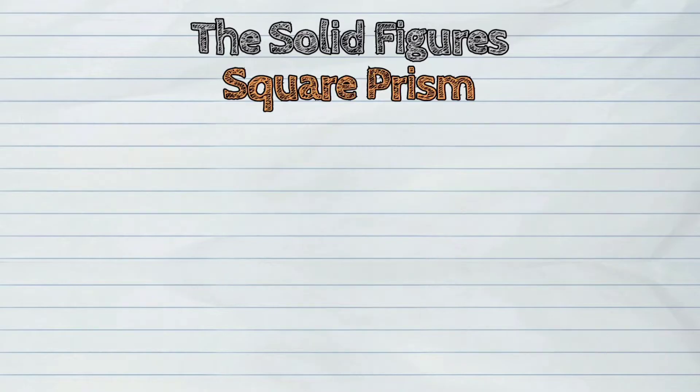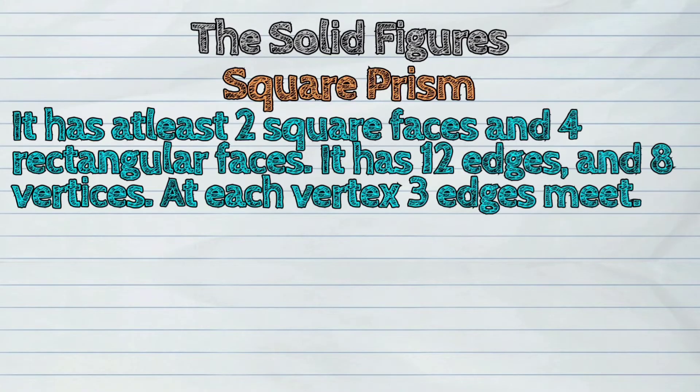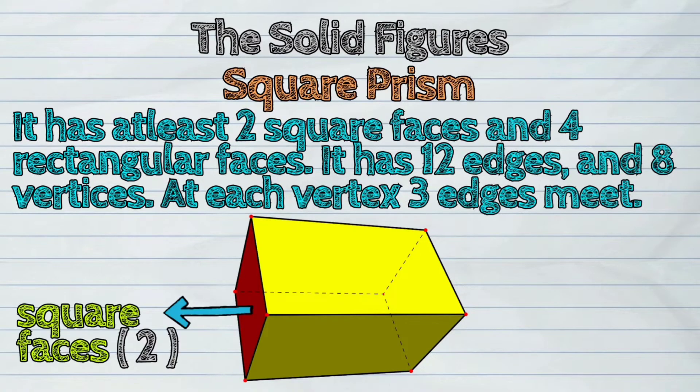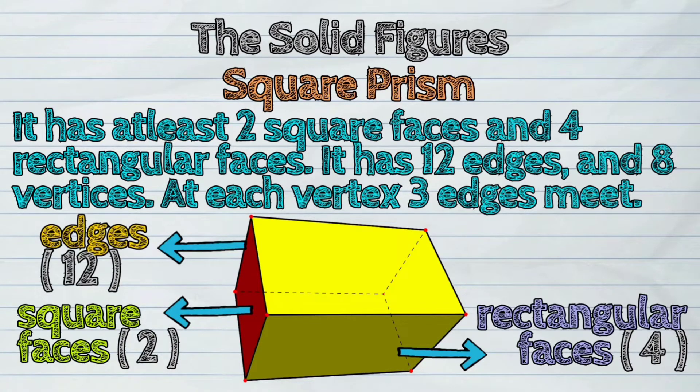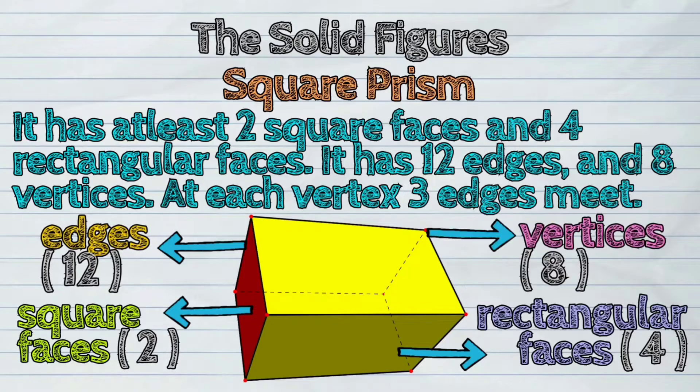Second, the square prism. It has at least two square faces and four rectangular faces. It has twelve edges and eight vertices. At each vertex, three edges meet.